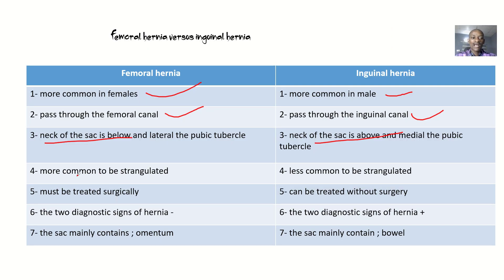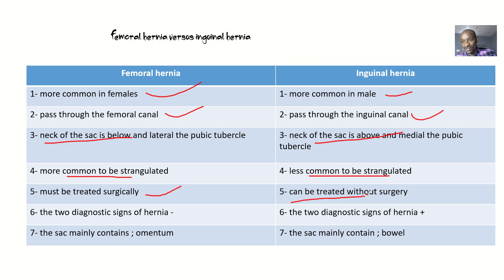Femoral hernia is more commonly strangulated, while inguinal hernia is less commonly strangulated. Femoral hernia must be treated surgically, whereas inguinal hernia can be treated without surgery. Regarding diagnosis signs, femoral hernia is negative and inguinal hernia is positive — though that point needs further clarification.